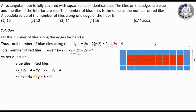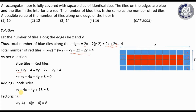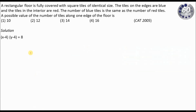Now if you try to factorize XY minus 4X minus 4Y plus 8 equals 0, you cannot directly factorize it. To factorize, I add 8 on both sides, giving XY minus 4X minus 4Y plus 16 equals 8. Now this can be factorized: taking X common gives (Y minus 4), and taking minus 4 common gives (Y minus 4), so finally (X minus 4)(Y minus 4) equals 8.